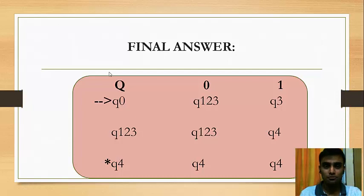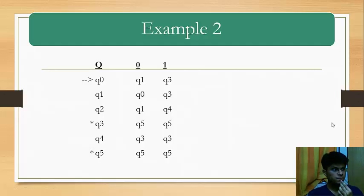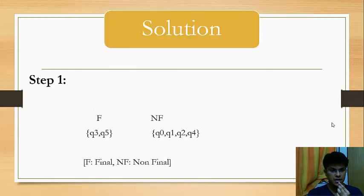Now, my friend Vineet Mithal will explain you the second example. So, here is example 2. You can see that this is the question in which we have been given two final states Q3 and Q5 and rest are the non-final states. In front of Q3 and Q5, there is an asterisk mark which states that these are the final states and in front of Q0, there is an arrow mark which states that this is an initial state.